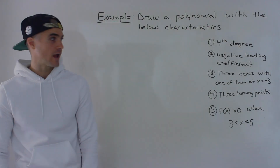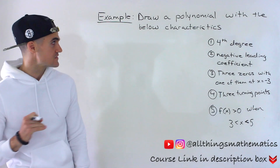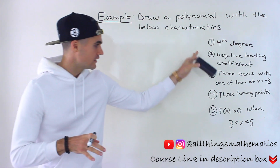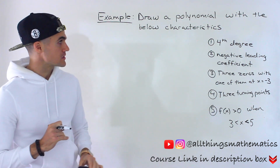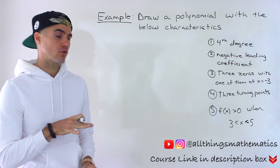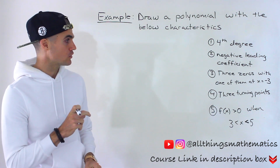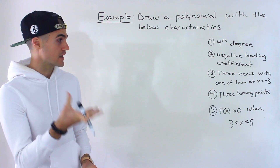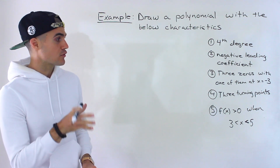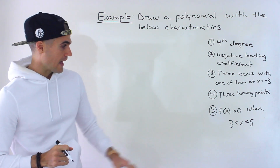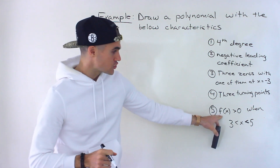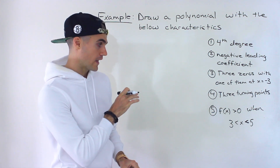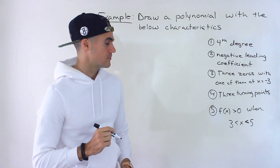Welcome back everyone, Patrick here. In this next video what we have to do is draw a polynomial given these five characteristics. It has to be a fourth degree, it has to have a negative leading coefficient, it has to have three zeros with one of them being at x equals negative three. There has to be three turning points, and the function is greater than zero when x is between three and five.